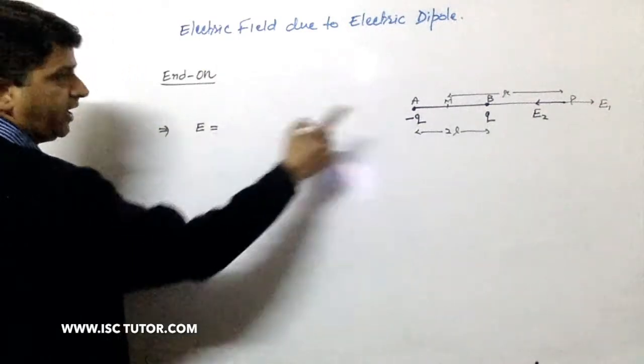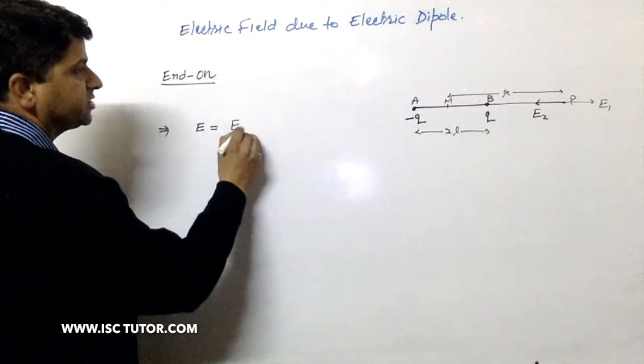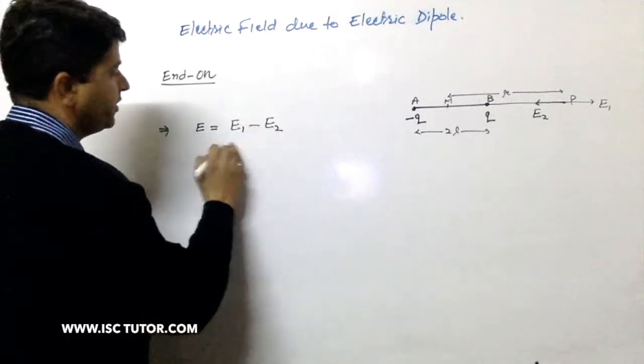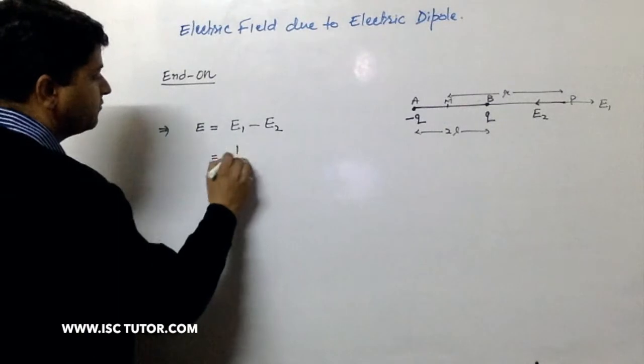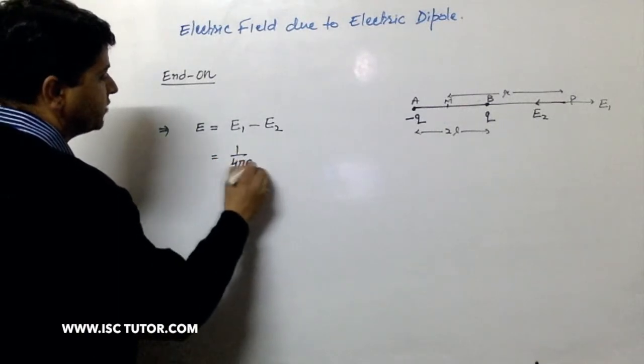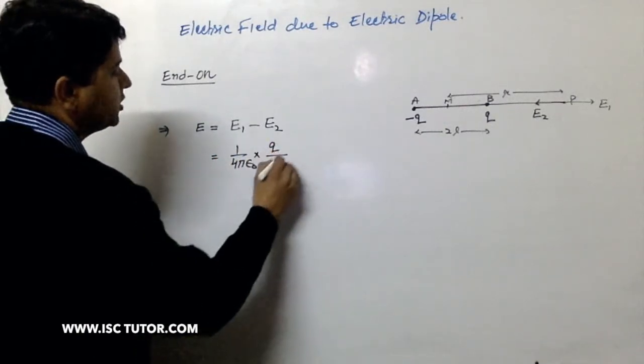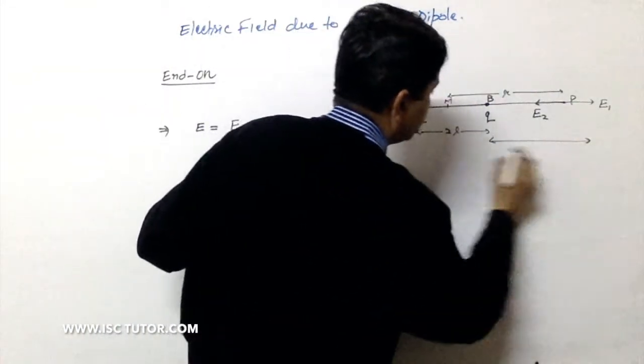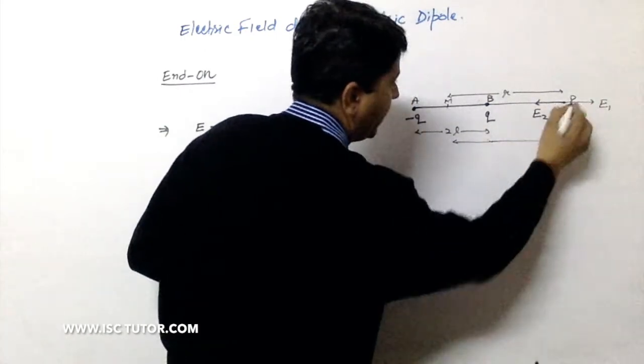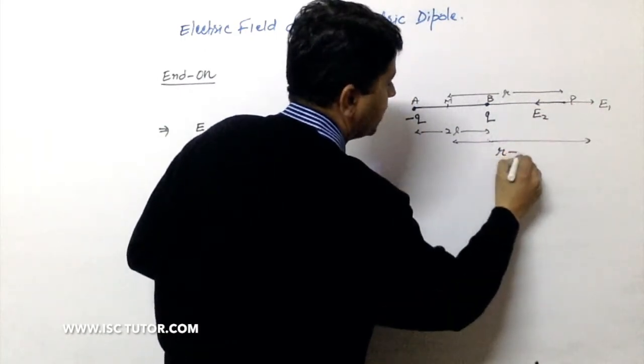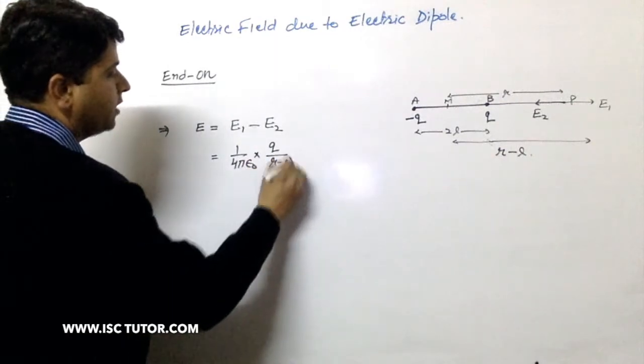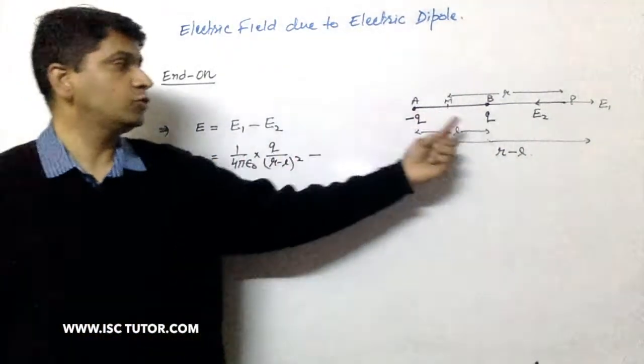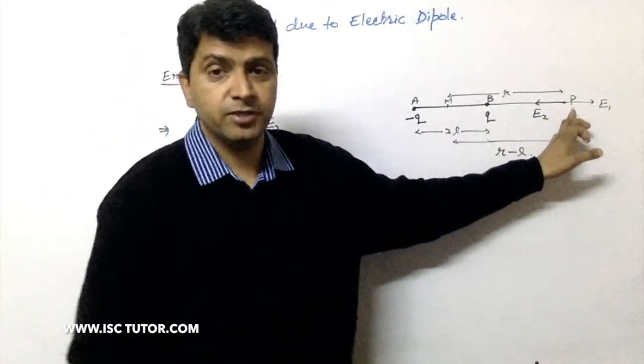So net field at that point P is simply E1 minus E2. Now if you write the formula here for E1, it is 1 upon 4 pi epsilon 0, Q upon, now if I'm taking the first case it is the displacement between the center of the dipole and the point P which is R minus L. So I'll write R minus L whole square. This is electric field due to charge Q at the point P.